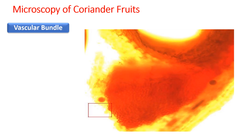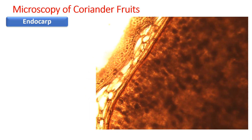About the vascular bundles: the single mericarp of coriander fruit has a single vascular bundle located at the dorsal surface in the transverse section. On the outside you can see the testa, and within the mesocarp you will find a lignified vascular bundle that can be stained with fluoroglucinol HCl.